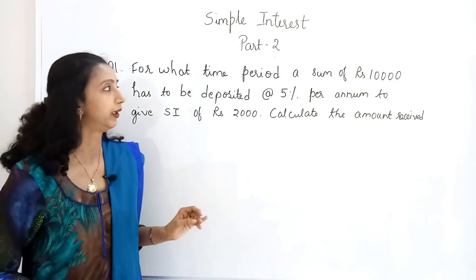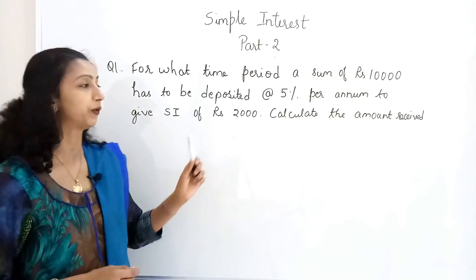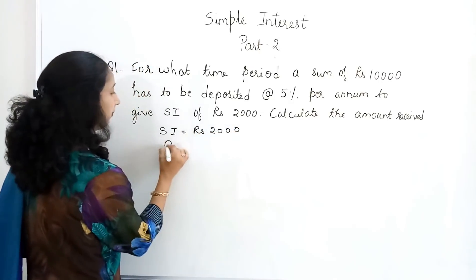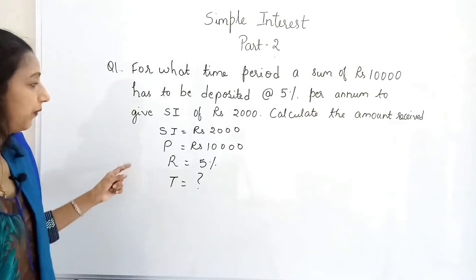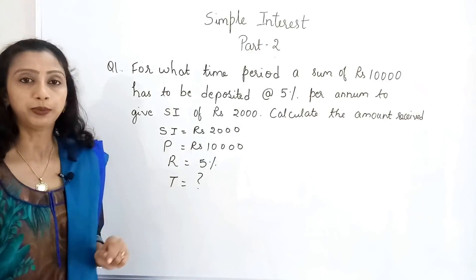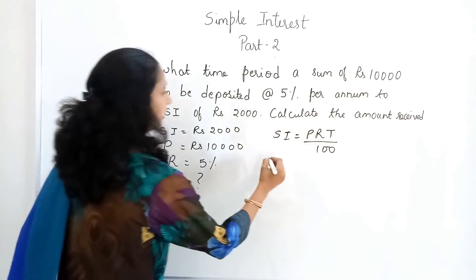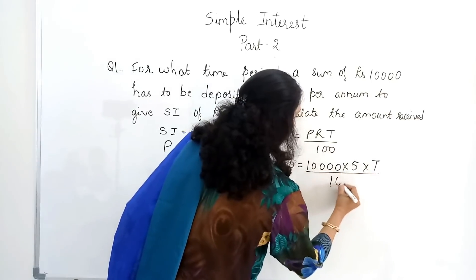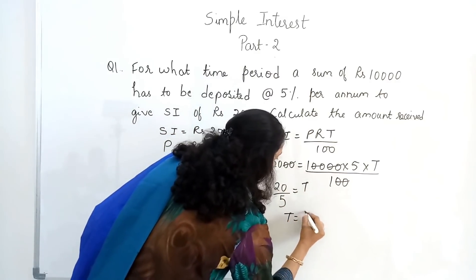Exercise: For what time period must a sum of ₹10,000 be deposited at the rate of 5% per annum to give a simple interest of ₹2,000? SI = ₹2,000, P = ₹10,000, R = 5%. We substitute into SI = PRT/100: 2000 = 10,000 × 5 × T / 100. Cancelling two zeros, 20 divided by 5 equals T, so T = 4 years.